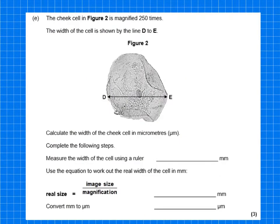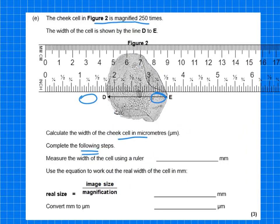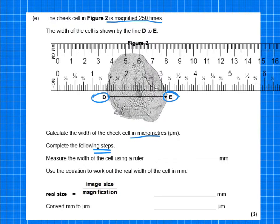Sometimes they'll give you questions where they give you different steps and sometimes the calculation as well, which is most helpful. It's really important to read the question carefully. It tells you it's a cheek cell, but more importantly it's magnified 250 times, so it's telling you the magnification. Then it tells you the width of the cell is from D to E. It says calculate the width of the cheek cell in micrometers and asks you to complete each step, so each step will get one mark.